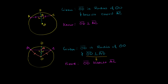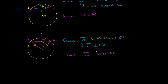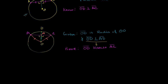Both of these right triangles share side OM, so OM is clearly equal to itself. Now, in a previous video — I think it's called 'More on Why SSA is Not a Postulate' — we established that SSA is not a congruency postulate.